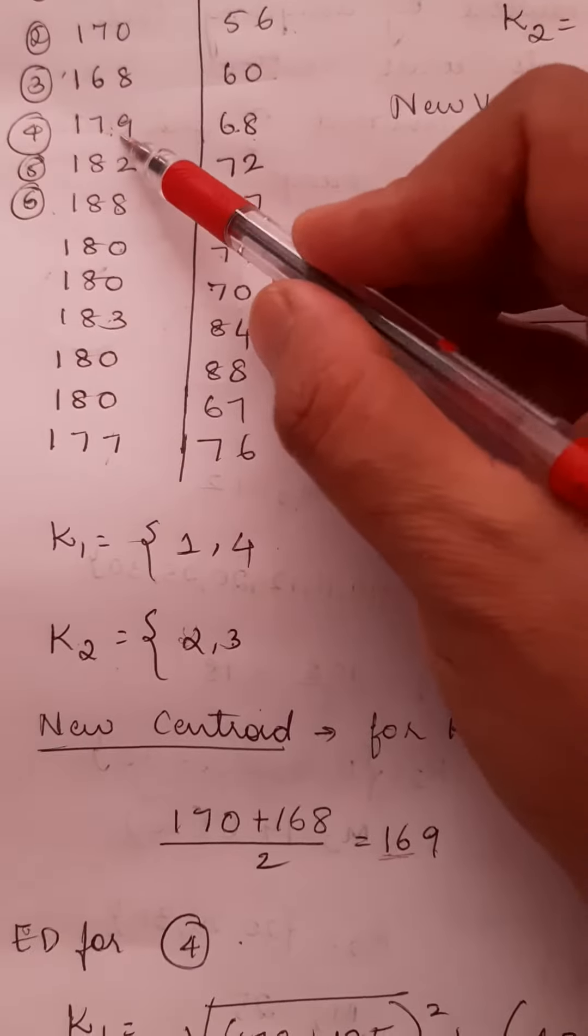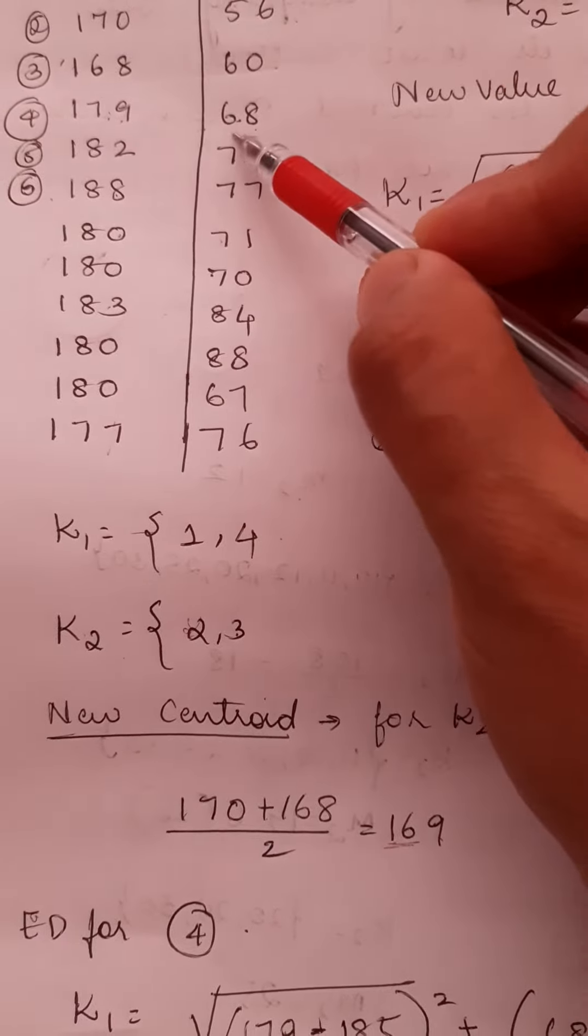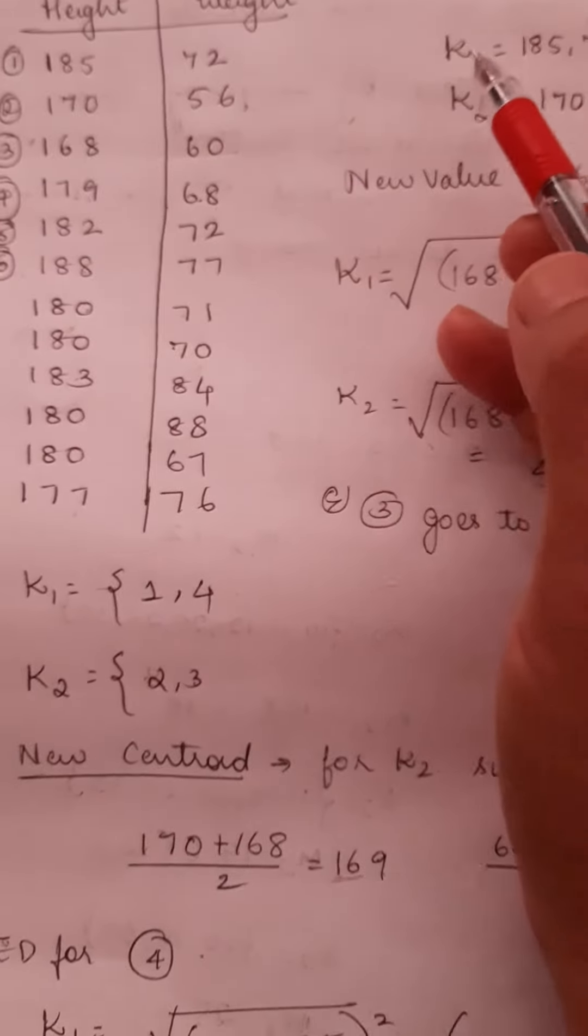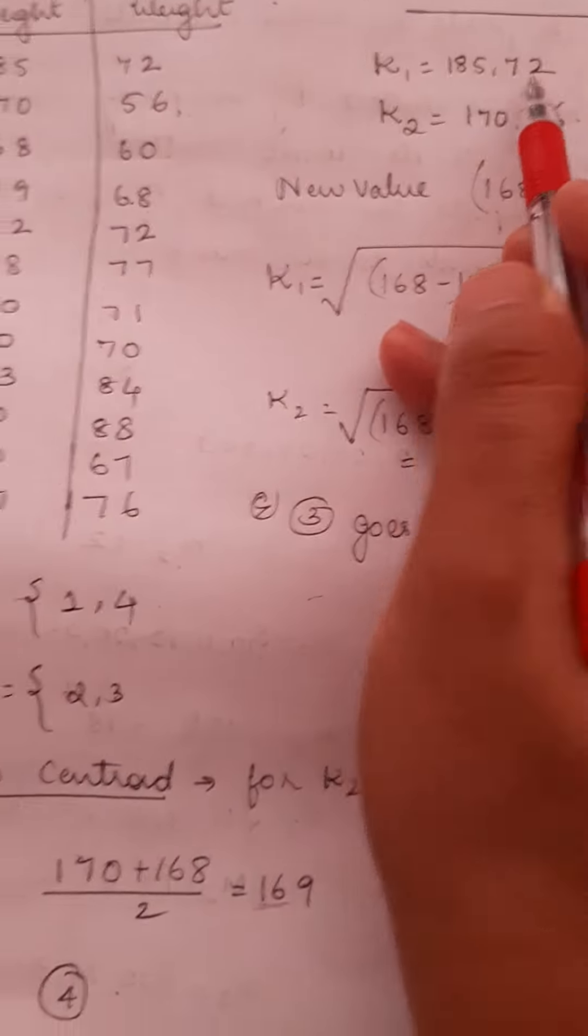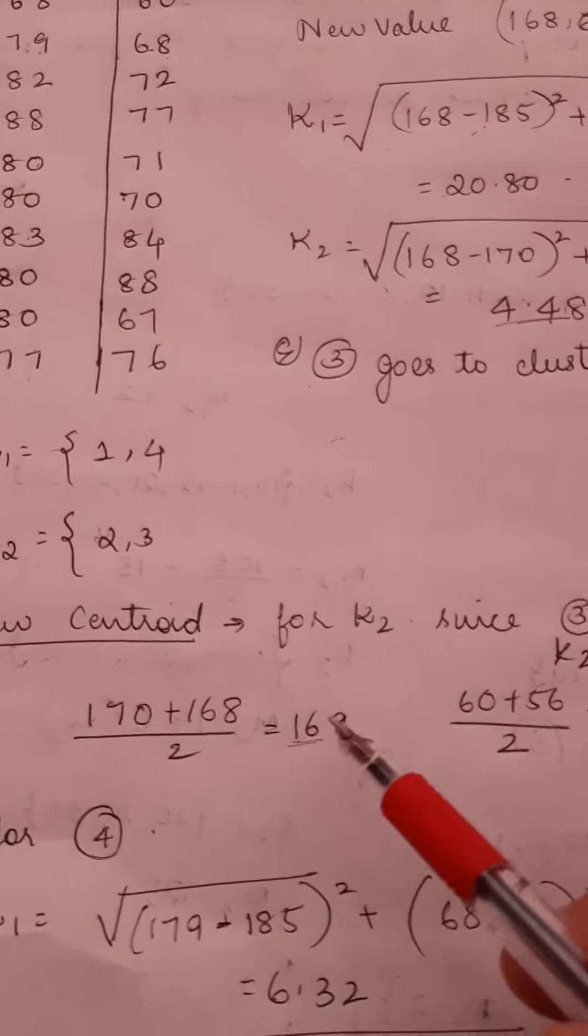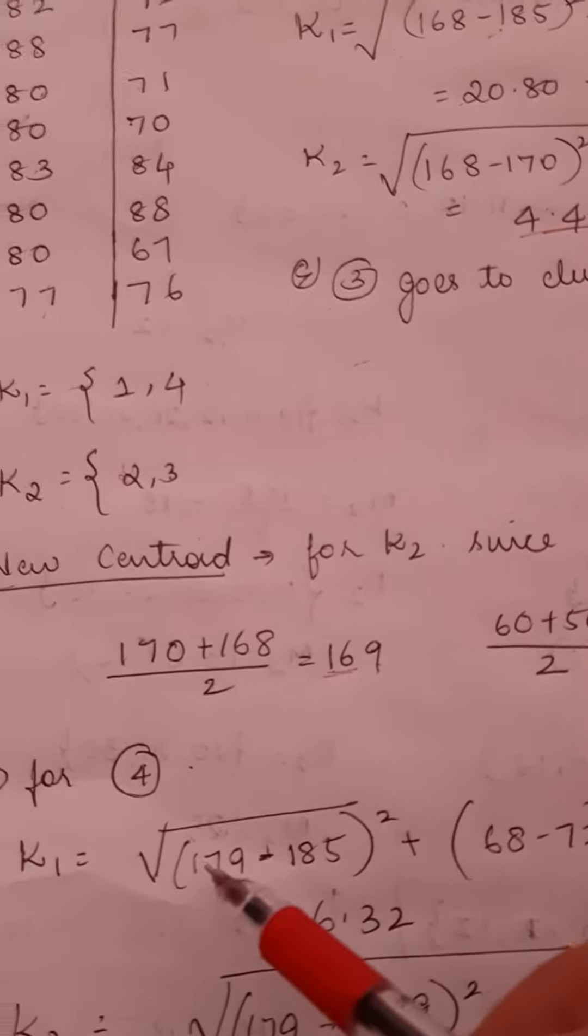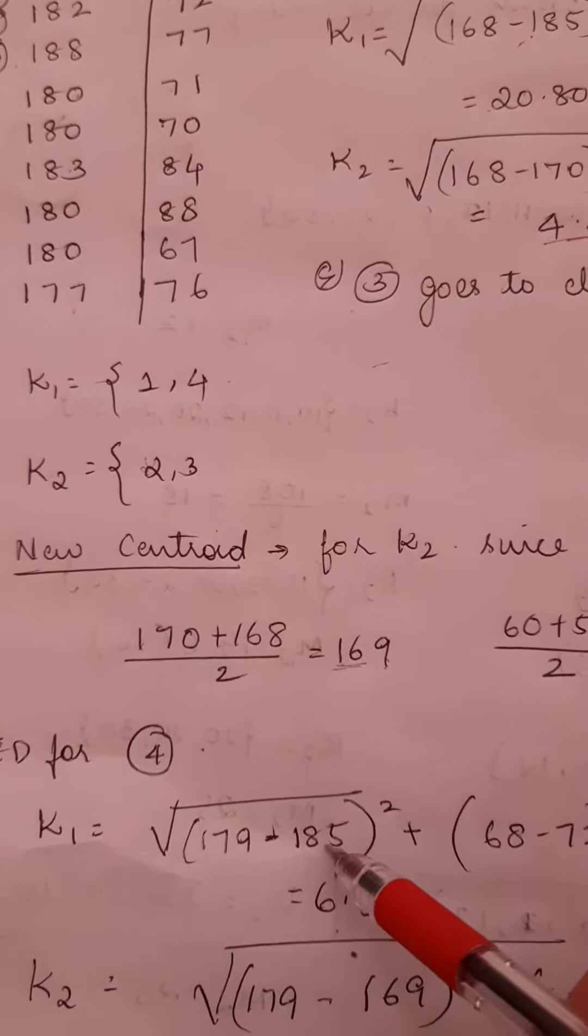The fourth record is 179 and 68. I am going to find the difference for this record from cluster K1, which is 185 and 72, and cluster K2, which is 169 and 58. Following the same process,